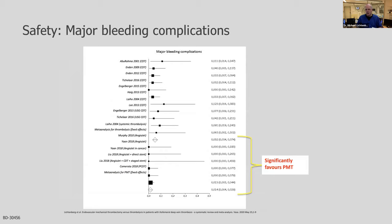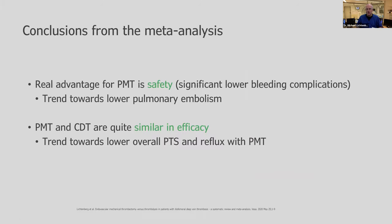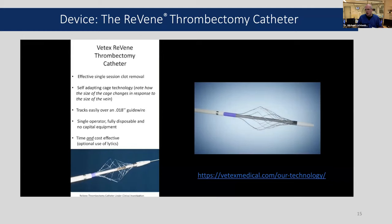However, in terms of bleeding complications, there was a highly significant difference between the PMT arm and the CDT arm. Based on this safety analysis, I clearly advocate for PMT because bleeding complications were the big issue in all thrombolysis study arms. The conclusion: the real advantage for PMT is the safety aspect — significantly lower bleeding complications within any PMT trial. In terms of efficacy, there was no difference in PTS or reflux. PMT is the way to go in terms of safety.